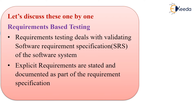Requirements are categorized in two types: explicit requirements and implicit requirements. Explicit requirements are stated and documented. Implicit requirements are assumed — it is assumed without any discussion or communication that the customer needs that requirement.